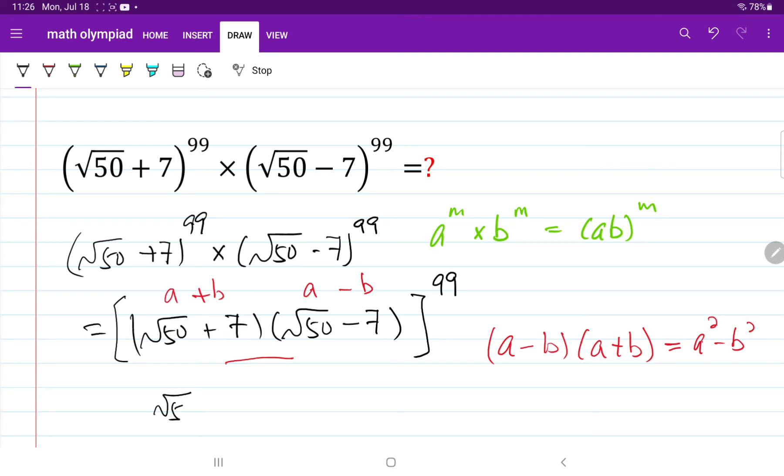So I have a squared minus b squared, both raised to the power of 99.